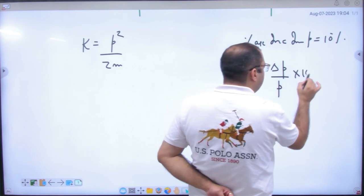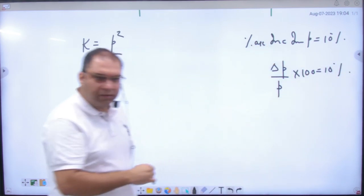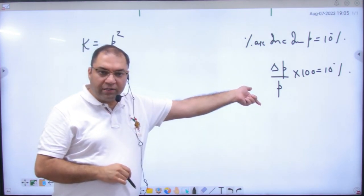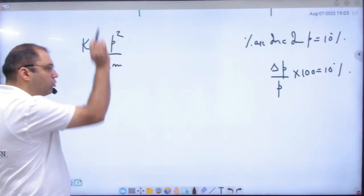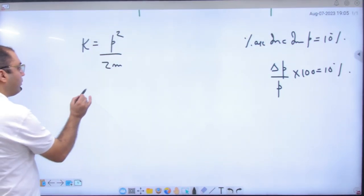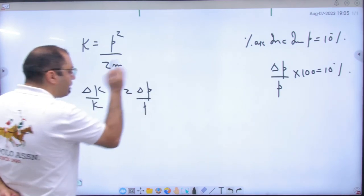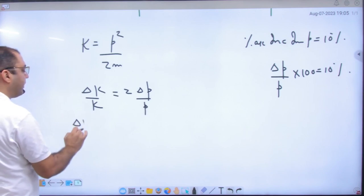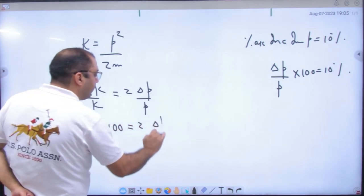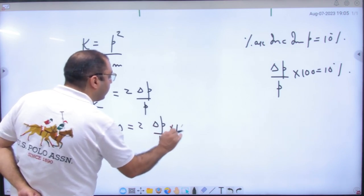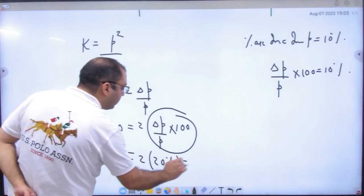Delta p by p into 100 is 10%. Ekhi baat hai. Delta p kya hota hai? p2 minus p1. This is fractional increase in momentum, or 100 se multiply karne ka matlab percentage increase. Error ka rule laga do. Error yaad exponent. Delta k by k is 2 into delta p by p. Mass to change hi nahi hota. 100 se dono sides ko multiply karo. 2 into delta p by p into 100. To iska percentage change kya given hai? 20%. To answer kya aaya?